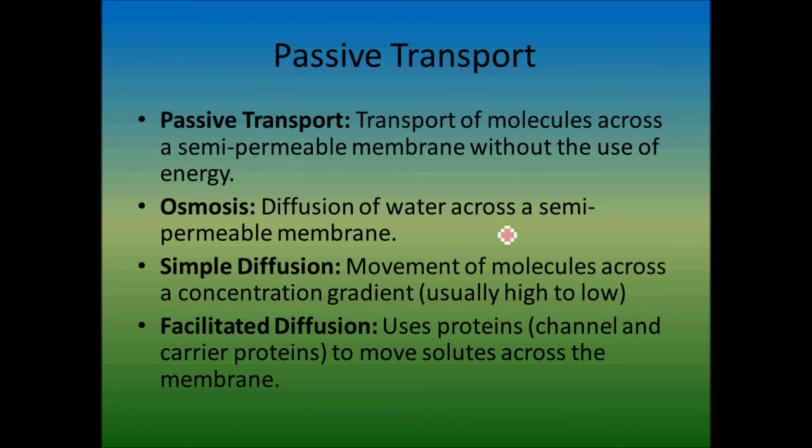Passive transport is when you transport molecules without using energy. Osmosis is the diffusion of water across a semipermeable membrane. Simple diffusion is the movement across a concentration gradient, high to low, but it can be low to high. It's just very rare. Facilitated diffusion uses proteins to move solutes across the membrane.